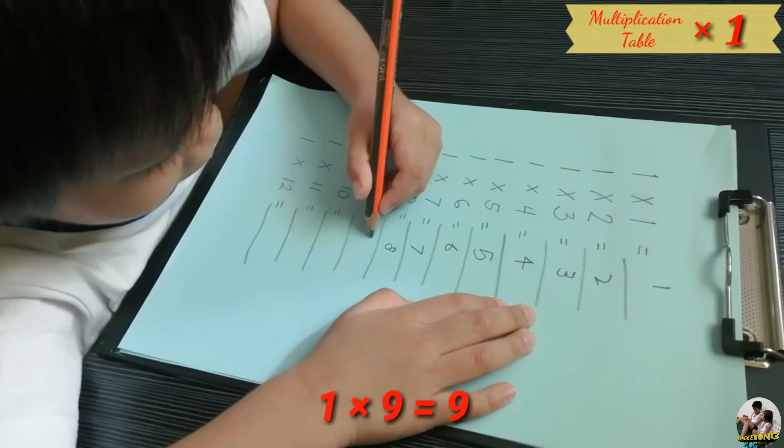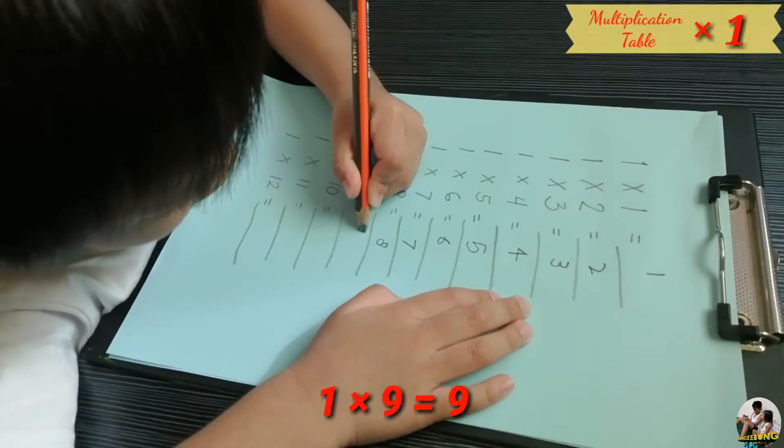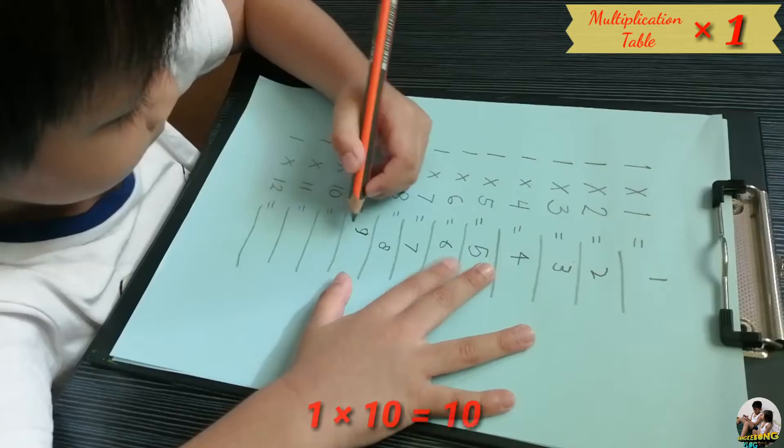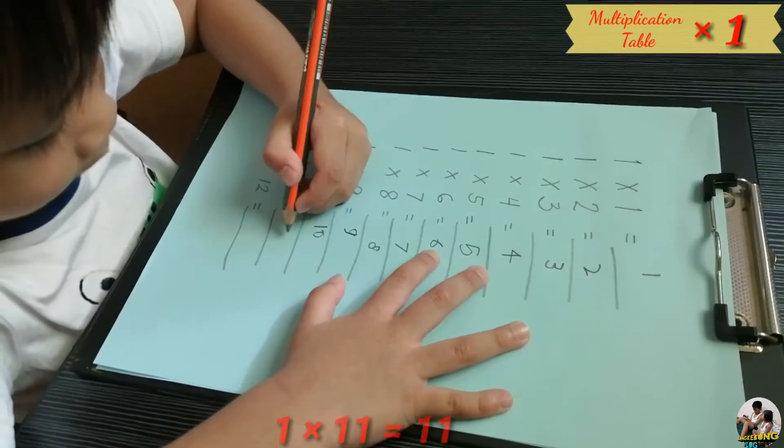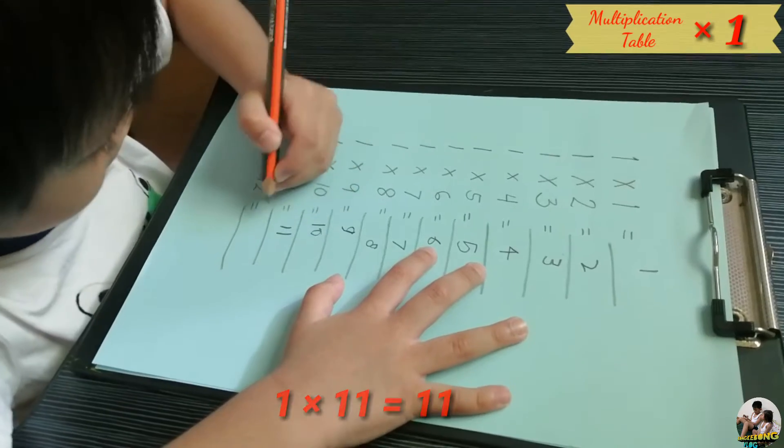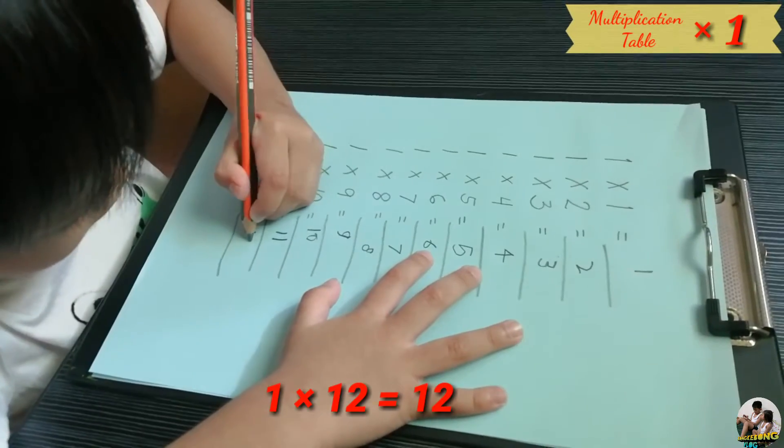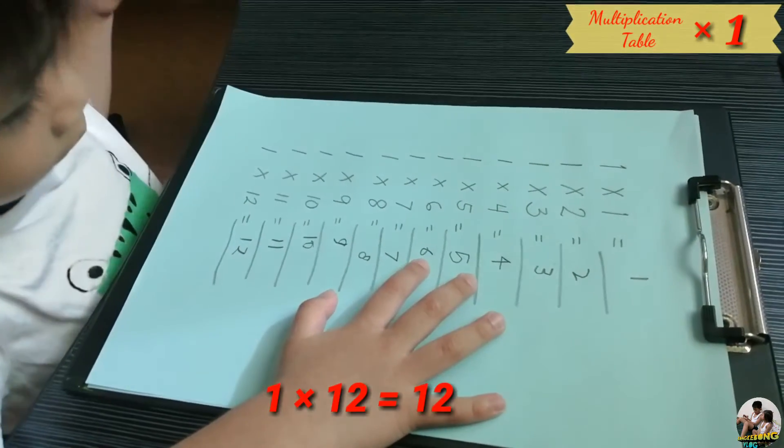One times nine equals nine. And one times ten equals ten. One times eleven equals eleven. One times twelve equals twelve. Great job.